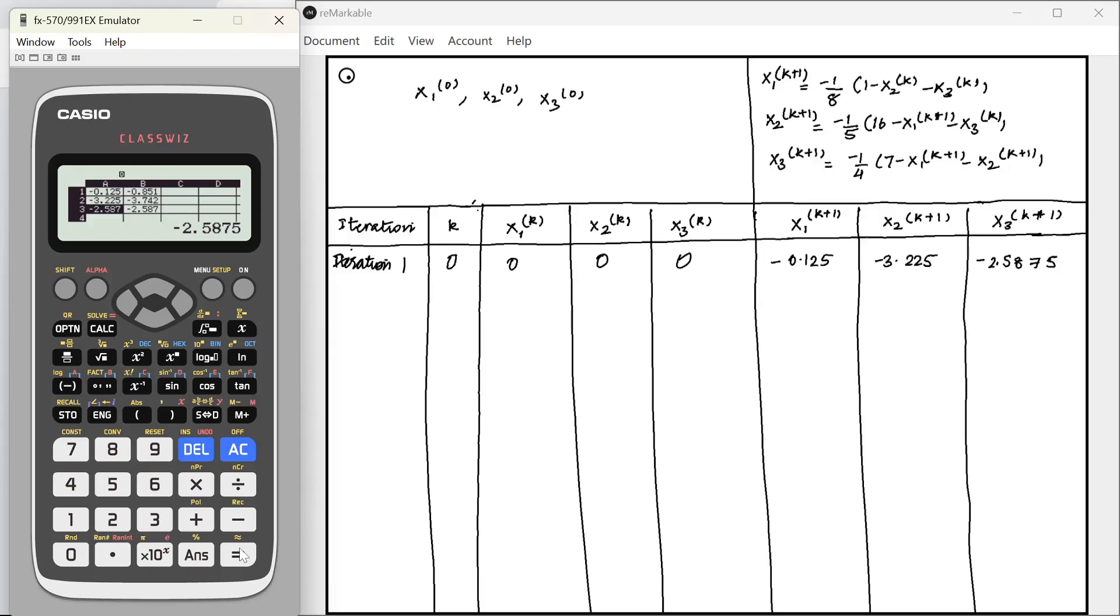In the next iteration, these become x1 1, x2 1, x3 1. I am going to write iteration 2, k will be 1, minus 0.125, minus 3.225, minus 2.5875.